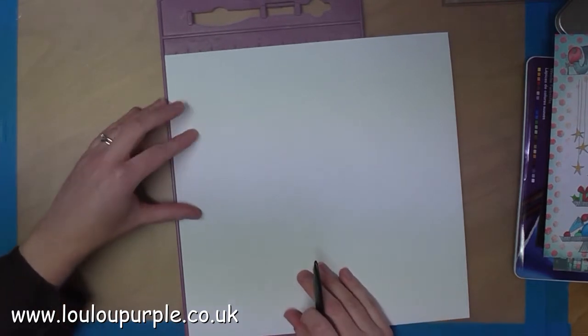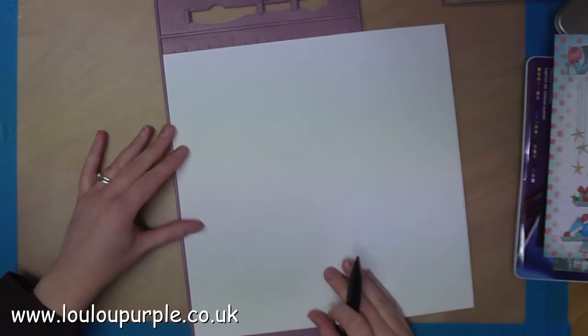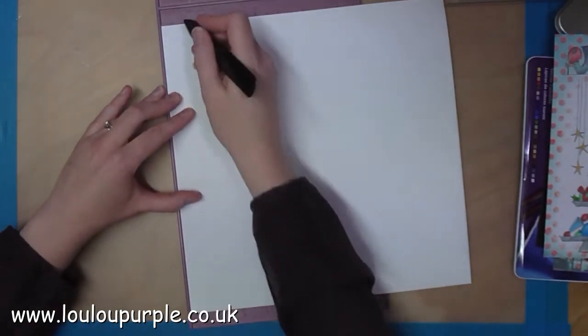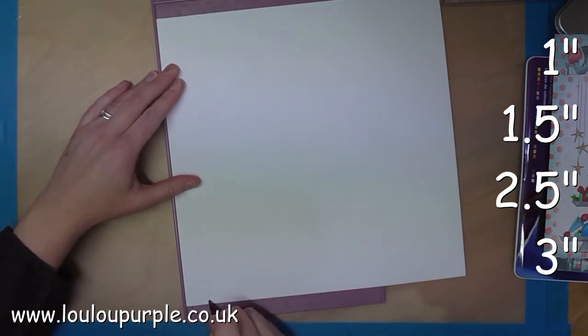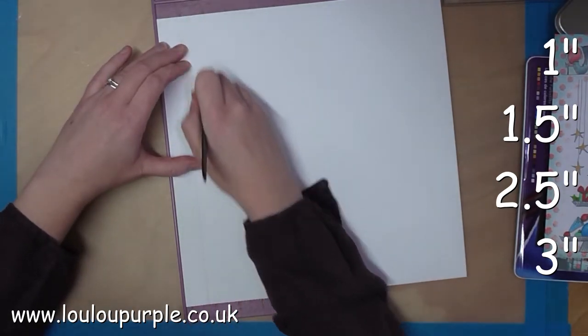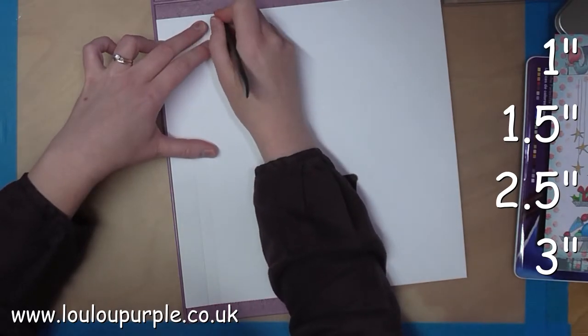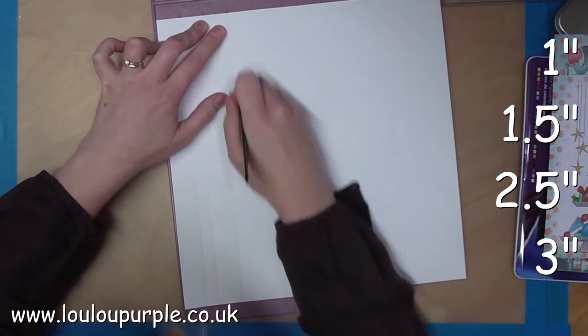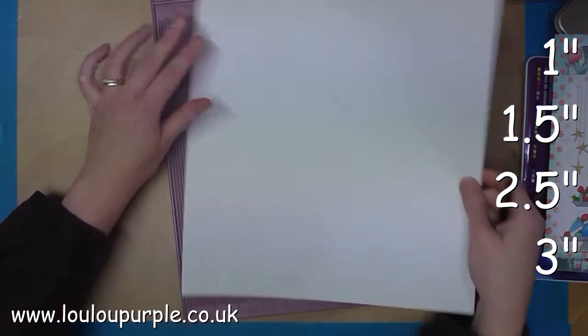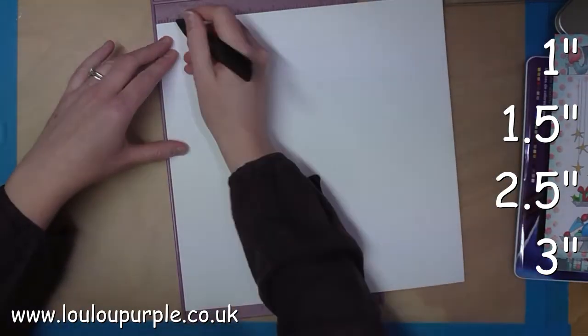First of all you will need a 12 by 12 piece of card and a scoreboard. You will then need to repeat this on all four sides of your piece of card.